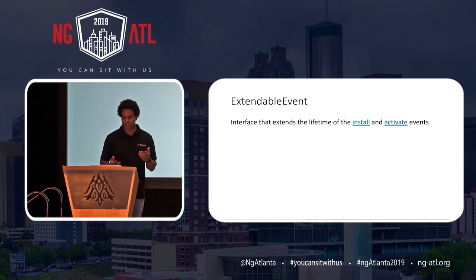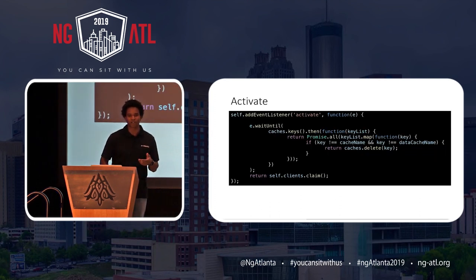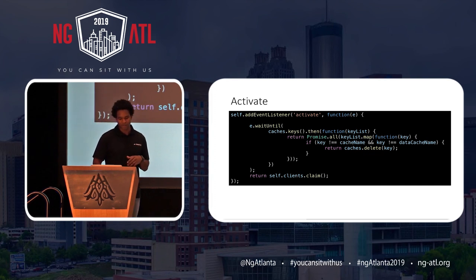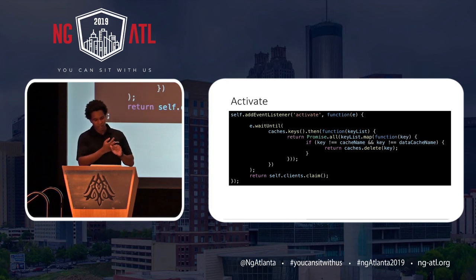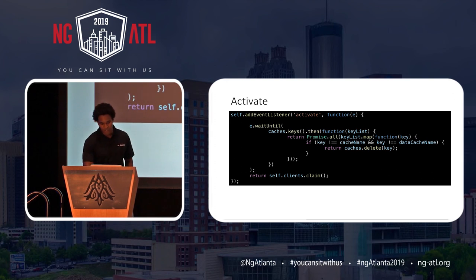The third lifecycle hook of a service worker is activate. After the service worker is installed, the activation step gives you the power to do whatever you need to do. When it says activate, that means the service worker has control over everything — intercepting those fetch requests and any other events. What happens here is the ExtendableEvent waits, then gets the keys to the cache from a list and returns a promise. Essentially it compares those keys to the ones actually in the cache, and if they're old it replaces them; if not, it leaves them.